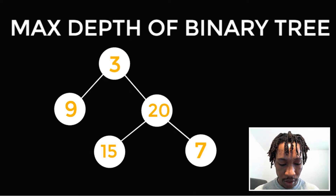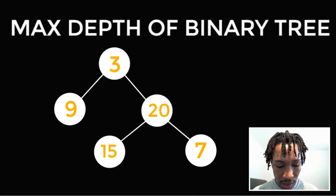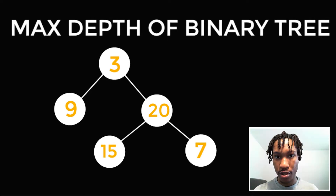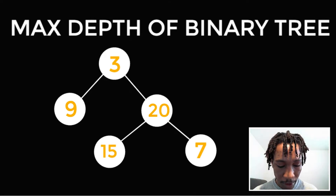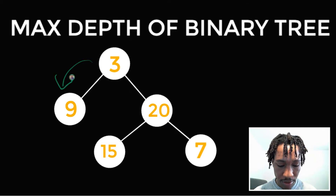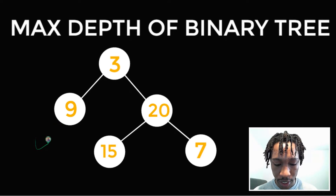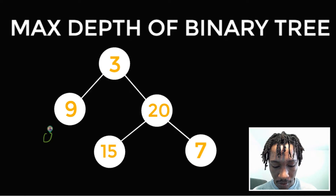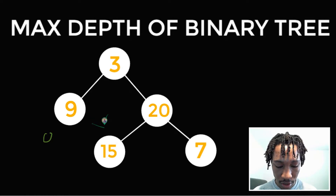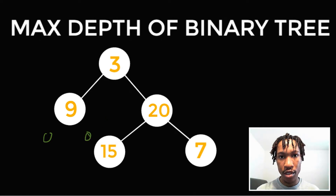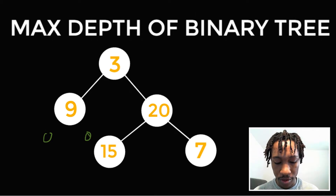We're going to use DFS. So we're at this node, and whenever we get to a null node, we return zero. We call the DFS algorithm on the left child path — we come here and we're at a null node, so we return zero. Then we go to the right child path — we're at a null node, so we also return zero. We take the maximum of those two, which is zero, plus one — that's one. So this node of value nine returns one.